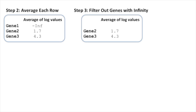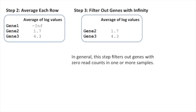Step 3 is an easy step. Filter out genes with infinity as their average. So in this case, we're going to filter out gene number 1. In general, this step filters out genes with zero read counts in one or more samples.